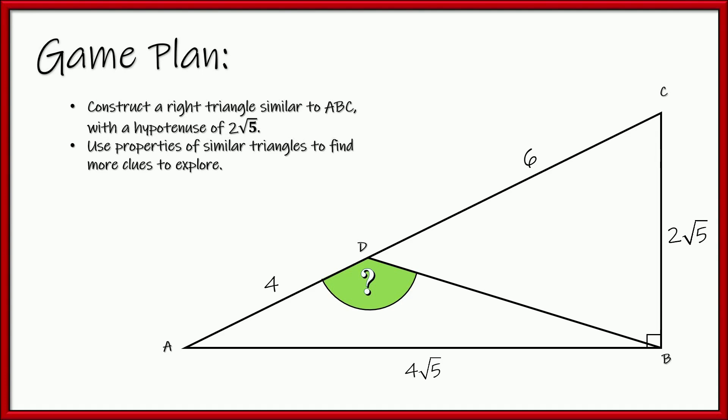All right, here's how I'm going to tackle this thing. What I'm going to do is, because we can't use trig, we're going to challenge ourselves to see if we can do this without any trigonometry and find that angle. So I'm going to try to construct another similar triangle inside of here where the other triangle is going to have a hypotenuse of 2 root 5, and we're going to see if we can use properties of similar triangles to figure out what this angle might be.